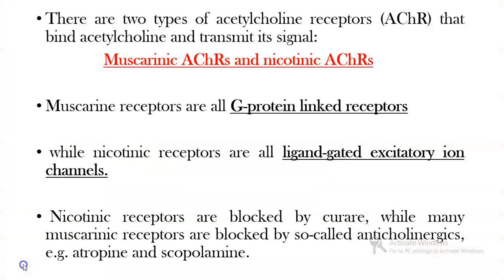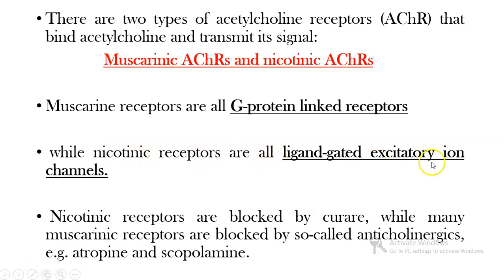What are cholinergic receptors or acetylcholine receptors? There are two types of acetylcholine receptors that bind acetylcholine and transmit its signal. The first is muscarinic acetylcholine receptors and the second is nicotinic acetylcholine receptors. Muscarinic receptors are all G-protein linked receptors, while nicotinic receptors are all ligand-gated excitatory ion channels. Nicotinic receptors are blocked by curare, while many muscarinic receptors are blocked by anticholinergics — examples are atropine and scopolamine.